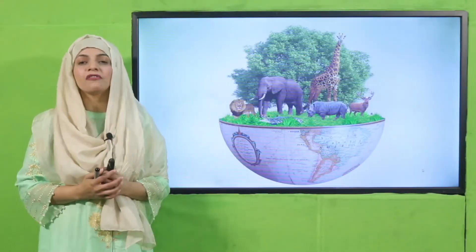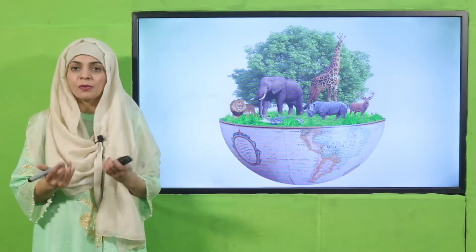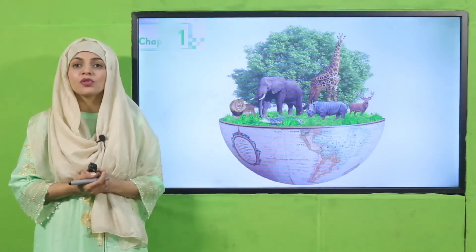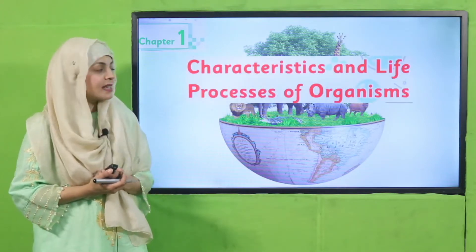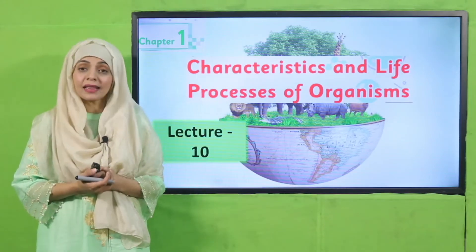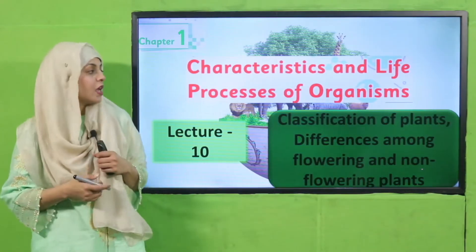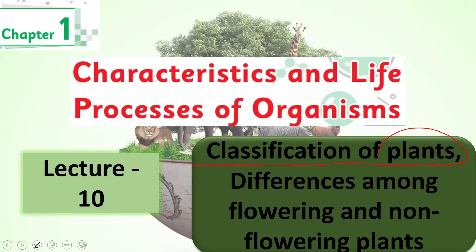Bismillahirrahmanirrahim. Assalamu alaikum, I hope you all are fine and staying safe and happy. I am your science teacher, Miss Farheen, and I welcome you all to your science class. As you know, we are on chapter number one: Characteristics and Life Processes of Organisms. Today I will deliver its tenth lecture, and we are going to discuss the classification of plants — specifically the differences among flowering and non-flowering plants.